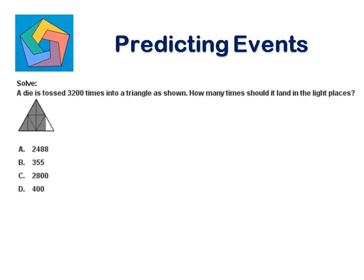Next problem. Solve. A die is tossed 3200 times into a triangle as shown. How many times should it land in the light places? Let's get the probability of landing in the light places first. Probability will be outcomes for the light places, 1, and the total outcomes 2, 3, 4, 5, 6, 7, 8. Probability becomes 1 over 8.